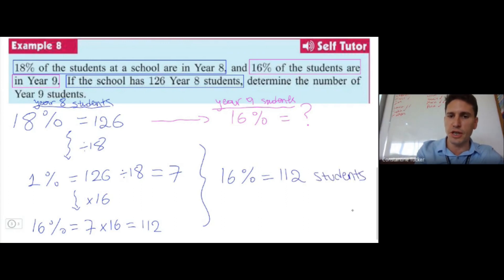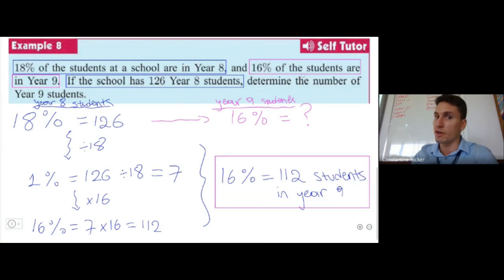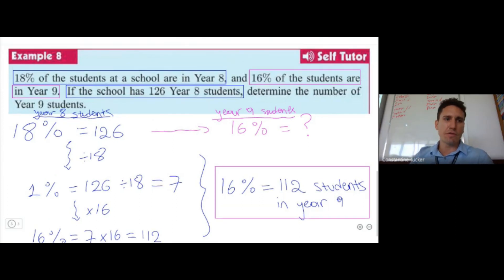So this would be 112 students in Year 9. Notice the difference between this and the previous problem: in the previous problem we were looking for 100%, but in this one we were actually looking for a different percentage. So we went from 18% to 16%. That would be an interesting approach because this approach you can always use in any problem you ever get—you can always find 1%, and then from that the sky is the limit. So let's wrap it up with the examples, guys, and move on to some practice. Everyone give it a go. Yes, you can use a calculator—please use a calculator for this.